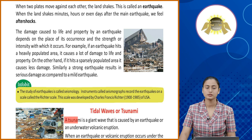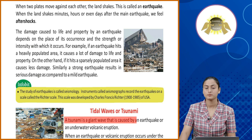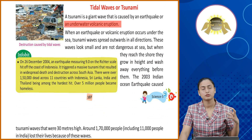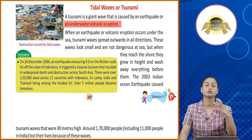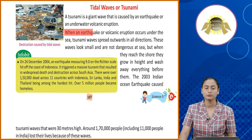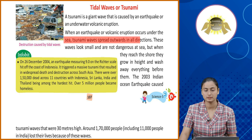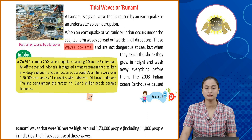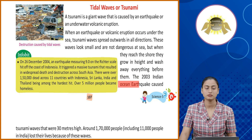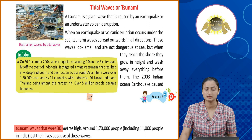Tidal waves or tsunami. A tsunami is a giant wave that is caused by an earthquake or an underwater volcanic eruption. When an earthquake or volcanic eruption occurs under the sea, tsunami waves spread outwards in all directions. These waves look small and are not dangerous at sea. But when they reach the shore, they grow in height and wash away everything before them. The 2003 Indian Ocean earthquake caused tsunami waves that were 30 meters high.